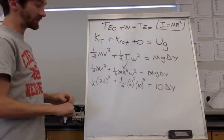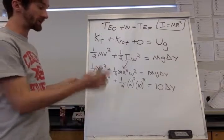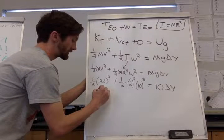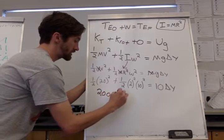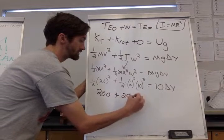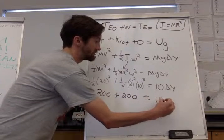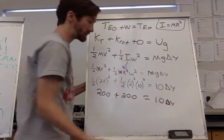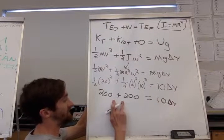So if we cancel out, excuse me we already canceled that mass. So now if we look at solving out these numbers, this is going to give us 200 plus 200 equals 10 delta y, which means that when we add these together, 400 equals 10 delta y and delta y is equal to 40 meters.